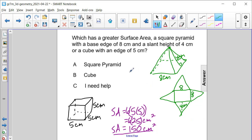So in order to calculate the surface area of this one, we're going to have the base area, which is 8 times 8, plus 4 triangles, each having an area of 1 half, 8 times 4.